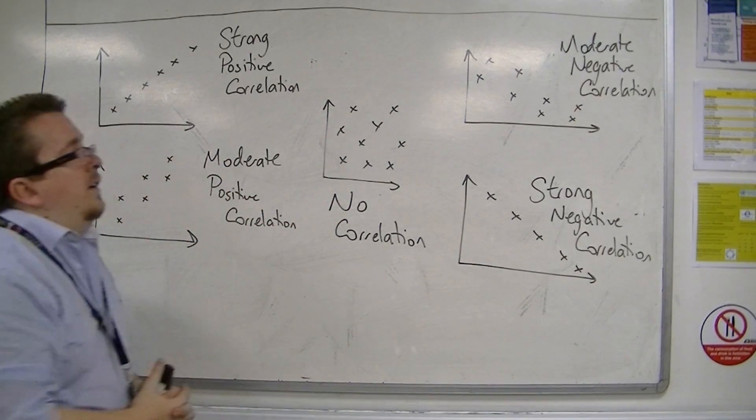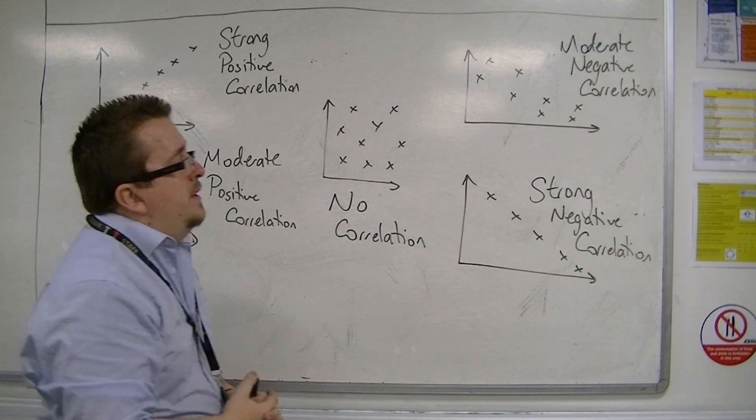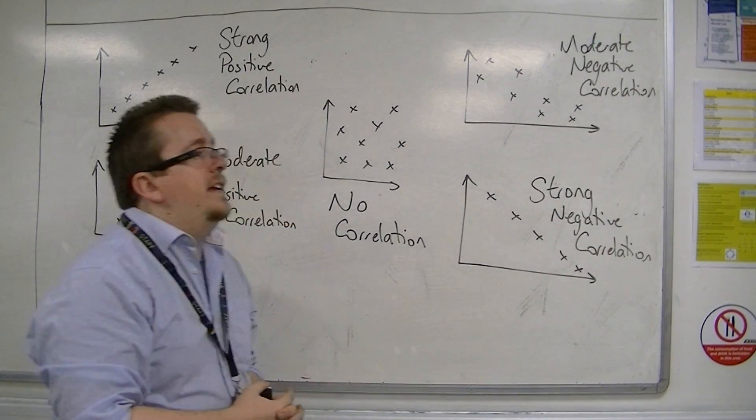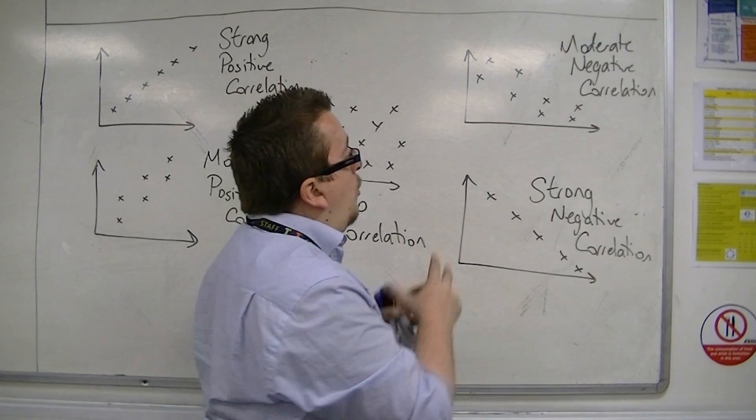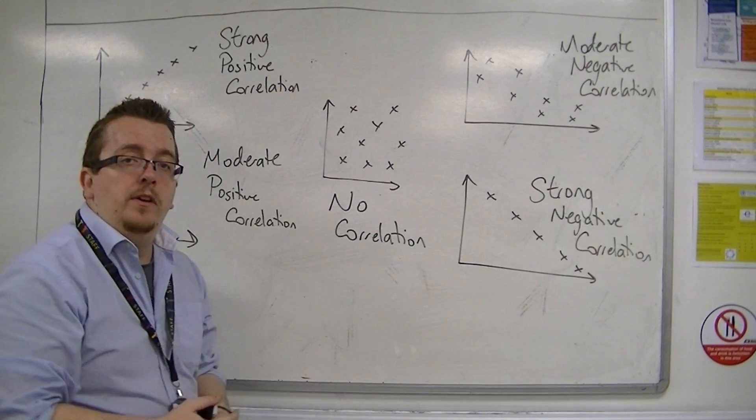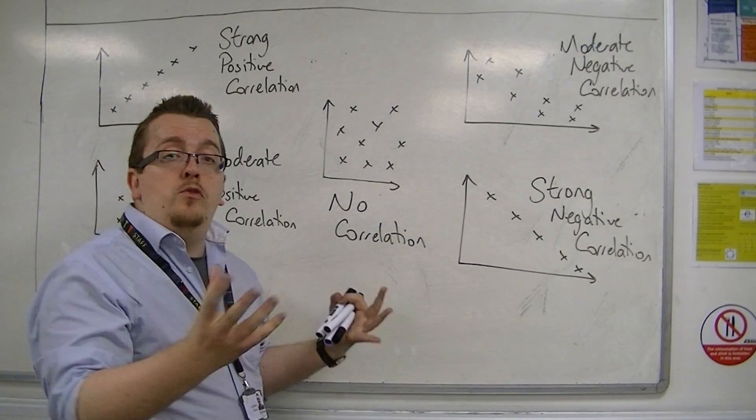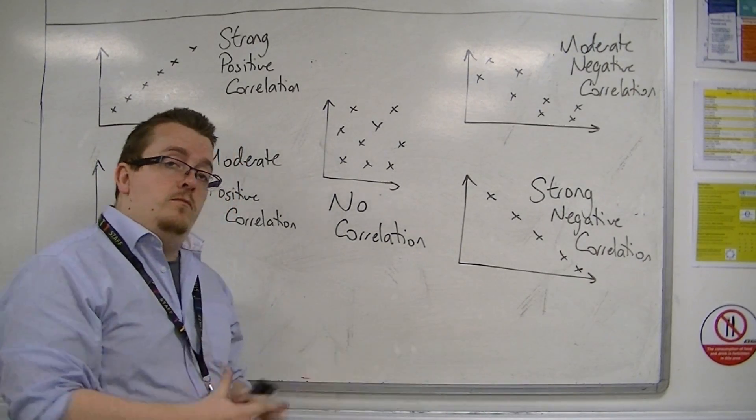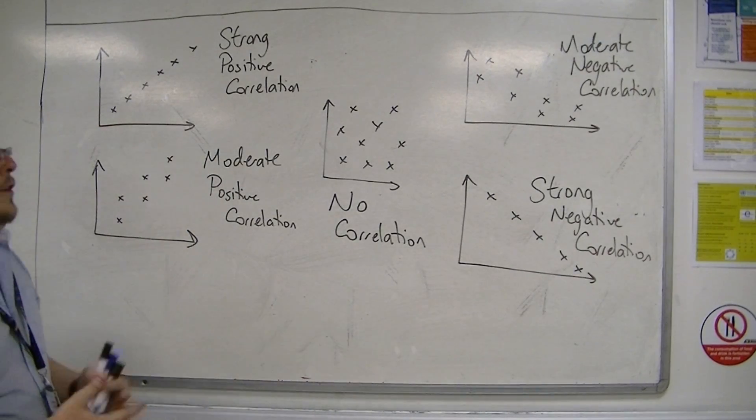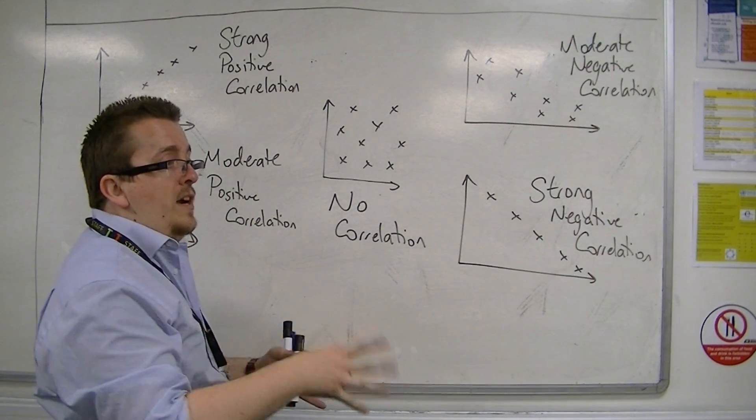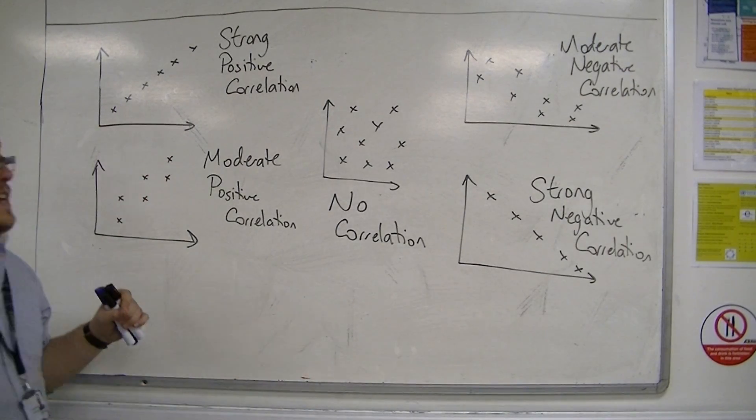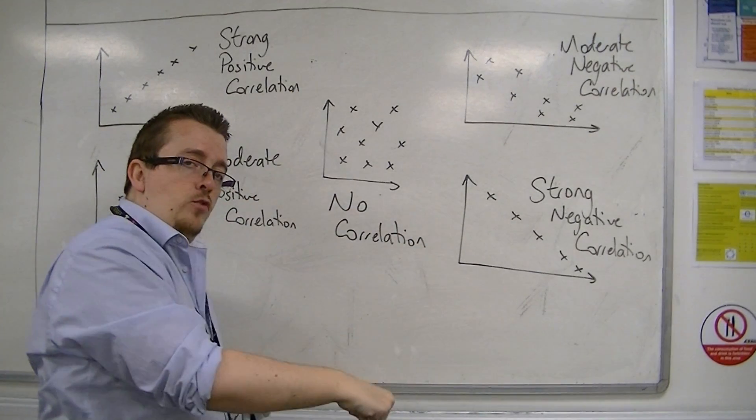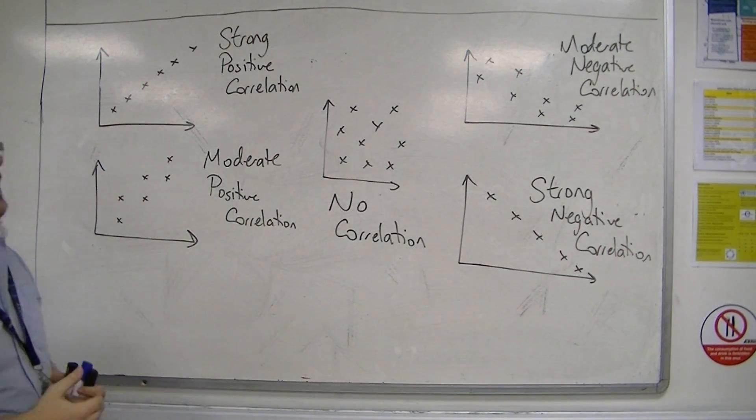Over here, in negative correlation, you might be looking at something like the more rainfall there is, the fewer ice creams that are sold at the beach, for example. So if there was an ice cream seller, then they would expect the more rainfall, the less ice creams they're going to sell. So as one increases, the other decreases. So that would be considered negative correlation.